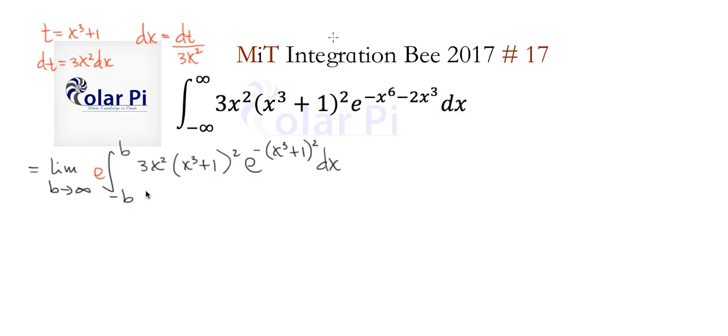Crucially, as x goes to positive infinity, t goes to positive infinity, but more importantly, as x goes to negative infinity, t goes to negative infinity. So as x goes to positive and negative infinity, respectively, so does t.